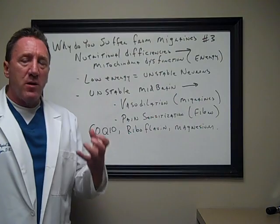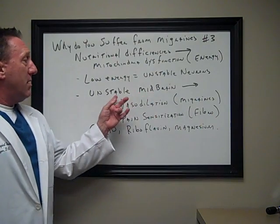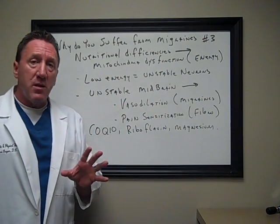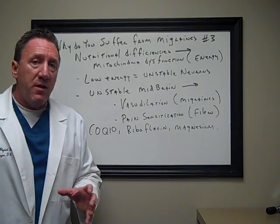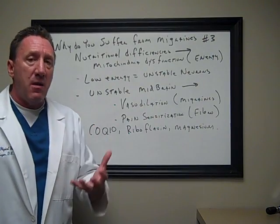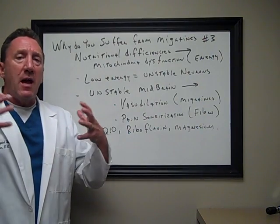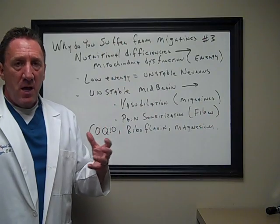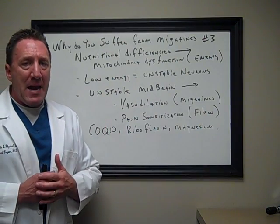There are certain neurons in your brain, especially in the midbrain — also known as the mesencephalon — that are unhealthy. They are unstable, and this causes vasodilation and other things to happen in the brain that's going to create pain.